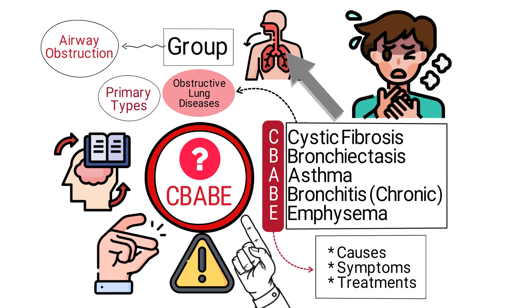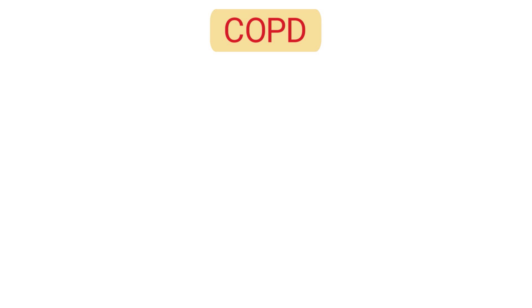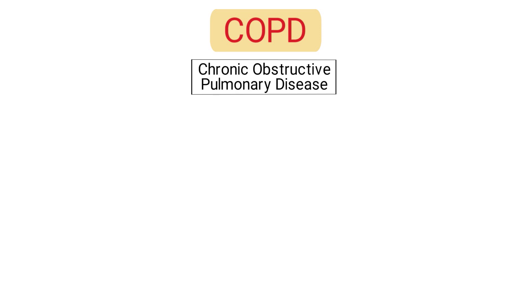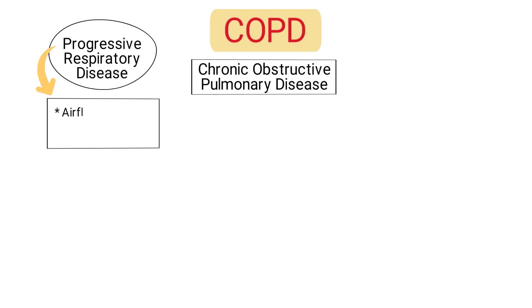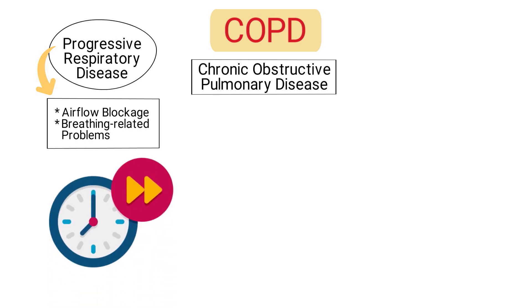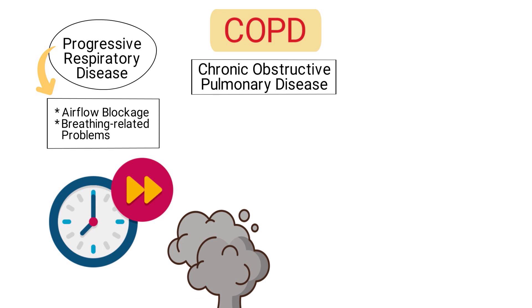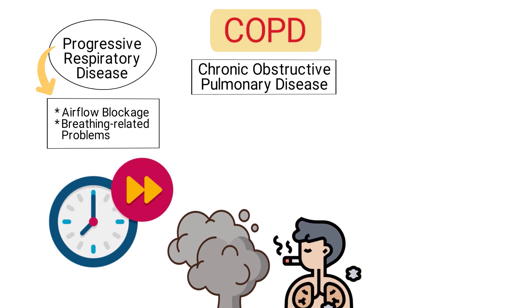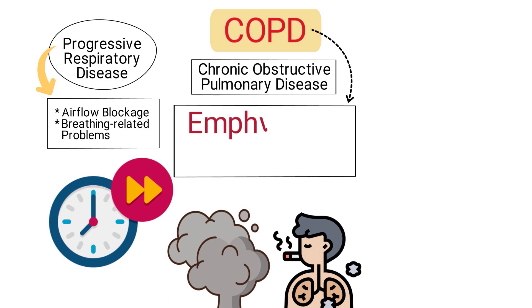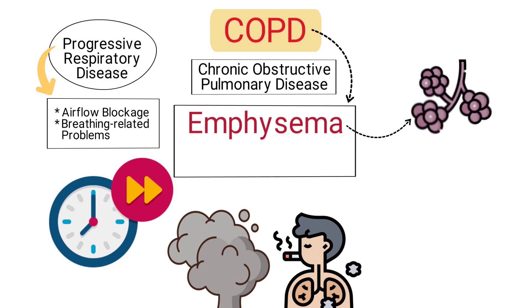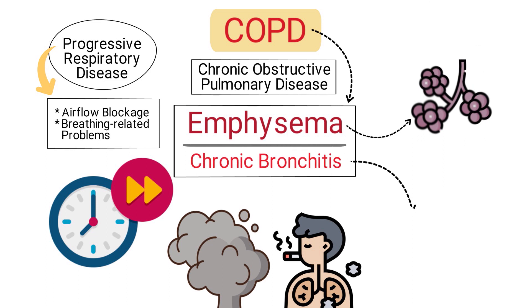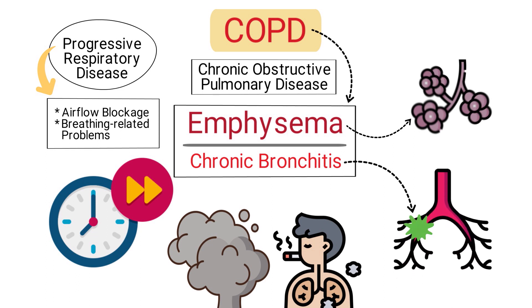So now let's talk more specifically about each type. First, we have COPD, which stands for chronic obstructive pulmonary disease. It is a progressive respiratory disease that causes airflow blockage and breathing-related problems. It's predominantly caused by long-term exposure to irritating gases or particulate matter, most often from cigarette smoke. COPD encompasses both emphysema, which involves damage to the air sacs in the lungs, and chronic bronchitis, which is characterized by inflamed bronchial tubes with excessive mucus production.